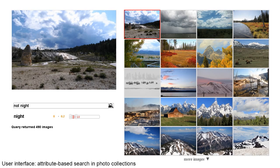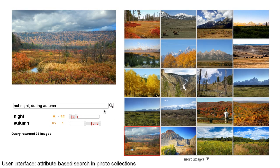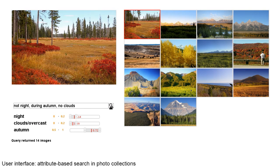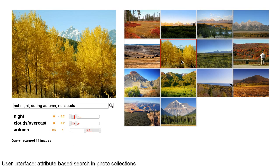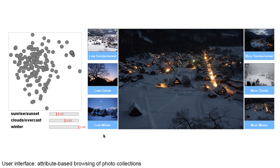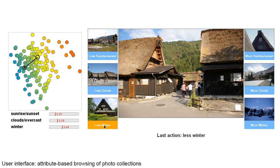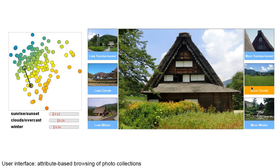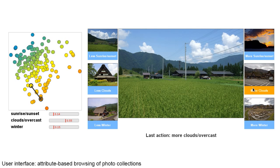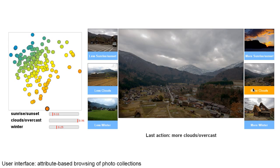In this example, we first search for images that are not taken at night. Then we refine the search to find autumn pictures. Finally, we filter out images with clouds. We can also browse a photo collection by retrieving images with more or less of a certain attribute. We decrease attribute winter, which corresponds to walking in a specific direction of the attribute space, as illustrated on the left. Then we retrieve an image with more clouds. Finally, we look for a sunset or sunrise image.